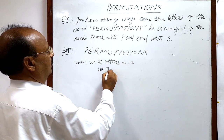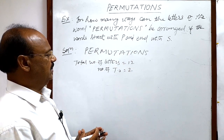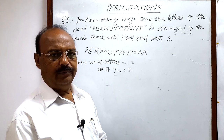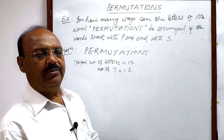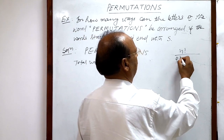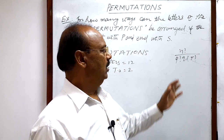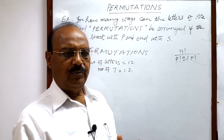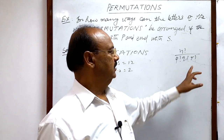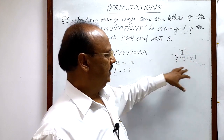The rest of the letters are distinct. We are going to use a formula we have studied and discussed several times in solving other problems, which is: n factorial divided by P factorial, Q factorial, R factorial — where n is the total number of objects, P is the number of objects alike of one kind, Q of a second kind, and R of a third kind.